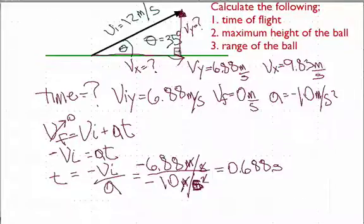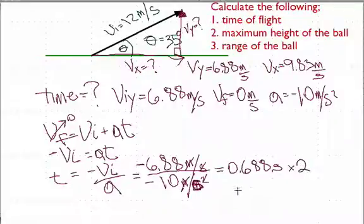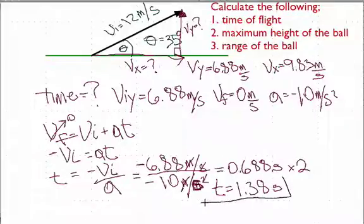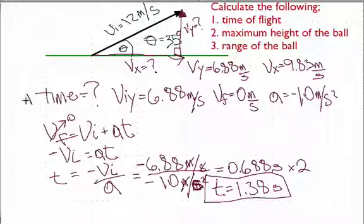That 0.688 seconds is the time for the ball to go up and stop, since we used initial velocity 6.88 and final velocity zero. To get the full time of flight, we multiply by 2 — accounting for going up and coming back down. That gives us a final time of 1.38 seconds.